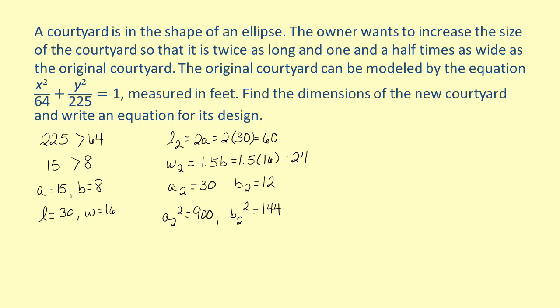Now we have our new values for A2 and B2, so our new equation is x squared over 144 plus y squared over 900 equals 1.